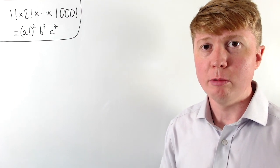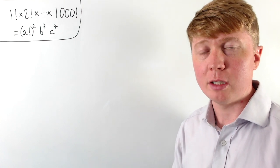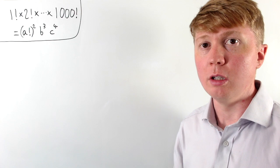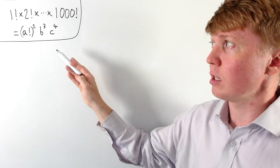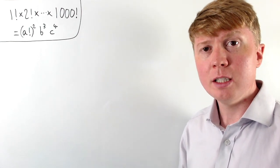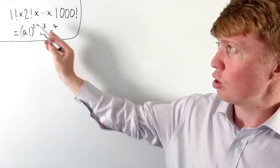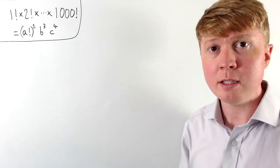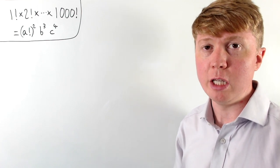We're going to solve this problem where we're given the product 1 factorial times 2 factorial times 3 factorial — the product of all the factorials up to 1000 factorial. We need to find a way of expressing this for positive integers a, b, and c as the square of a factorial times a power of 3 times a power of 4. The key to getting started is to rewrite this product in a different way that will help us take out powers of 3 and powers of 4.